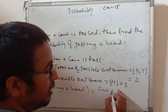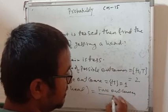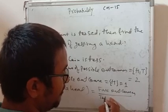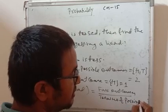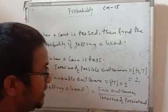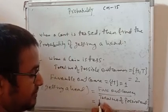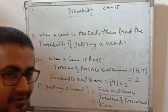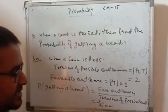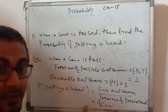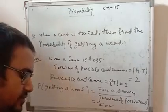Here, what are the favorable outcomes? One — only head. And the total number of possible outcomes is two. So the probability is one by two, which is half. When a coin is tossed, the probability of getting a head is one by two, that is 50 percent. This is favorable outcomes by total number of possible outcomes — a very simple question.